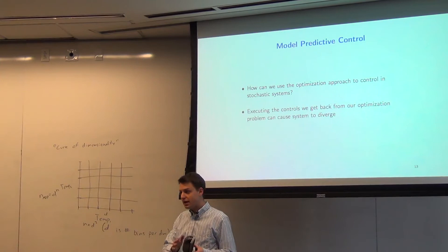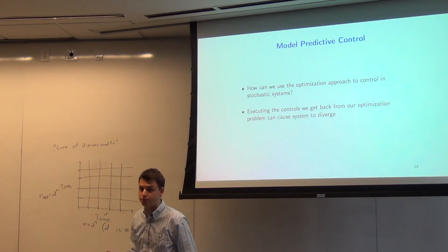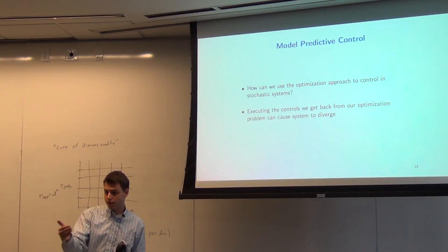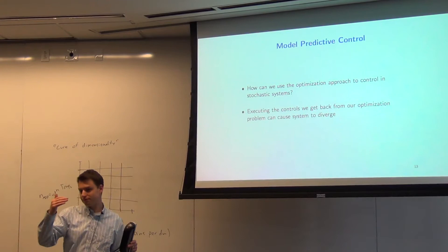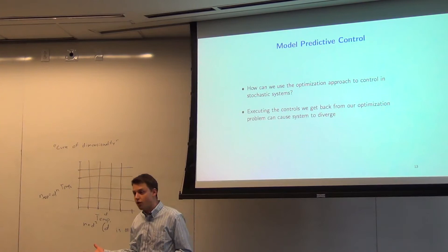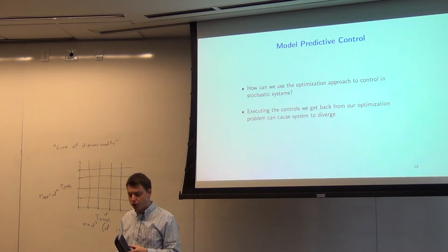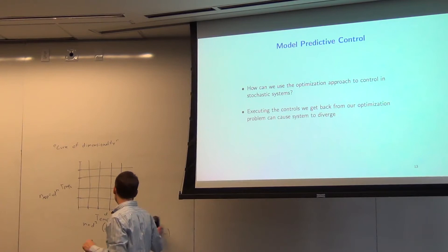The optimization paradigm worked well for deterministic systems because we could analytically say what our next state was going to be, giving a well-defined optimization problem. The trouble when you introduce stochasticity is that this becomes not really a well-defined problem anymore, because we don't know what our next state is going to be. We know it in expectation, but that's not the same as knowing it absolutely.